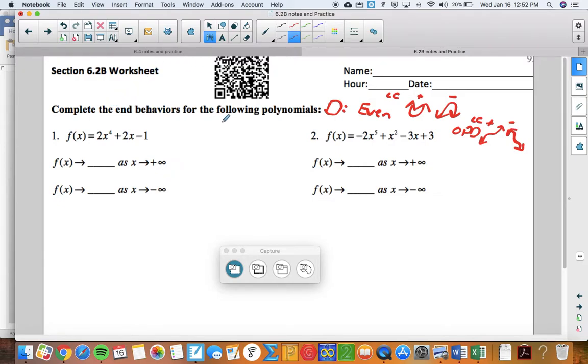So, complete the end behaviors for the following polynomials. This is an even degree polynomial, so I'm thinking a parabolic shape, and it's a positive leading coefficient. So it's going to basically look like this. Now, there's actually going to be some bumps in the middle, perhaps, but it's going to look like that, going up and up. So as x approaches positive infinity, which is on the x-axis, so that's as it goes to the right, what does y do? Because remember, f of x means y. Well, that's going up forever in a positive direction. So y goes up in a positive direction as x goes in a positive direction.